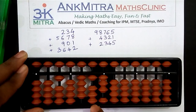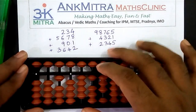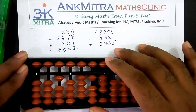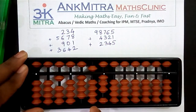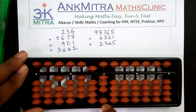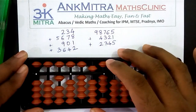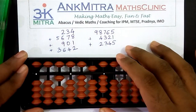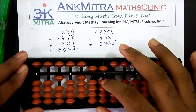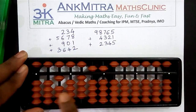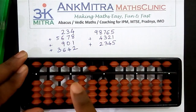Now coming to the addition of four on the tens place. I don't have four beads available but I do have five, so I can use the small friend of four — small friend of four is one — so plus five minus one, and the addition of four is done. Coming to the addition of two on the units place, again I don't have two beads available but I do have five, so I use the small friend of two — small friend of two is three — so plus five minus three, and the addition of two is complete.